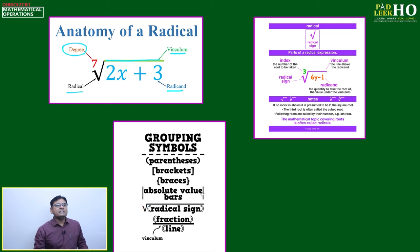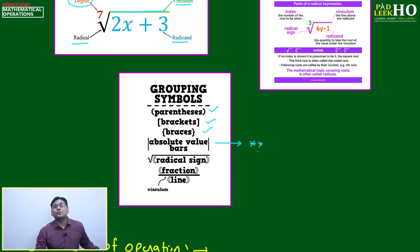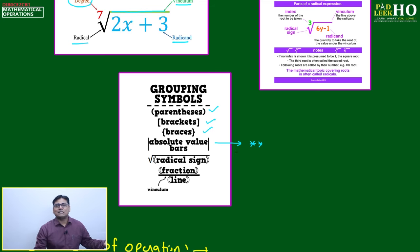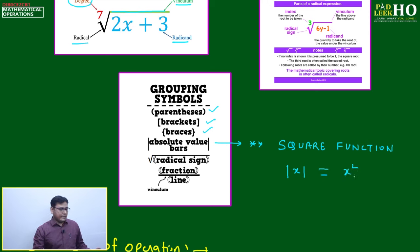As grouping symbols, the order is: parenthesis first, then bracket, then braces. Another application is absolute value — one of the best mathematical and algebraic tools to explore many functions. We are not going to discuss absolute value now; it is an advanced mathematical operation that will be discussed during your algebra chapter.